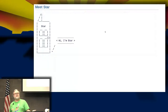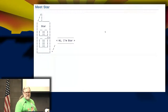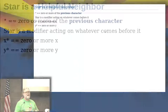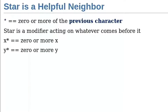Meet star. Star matches the previous character — whatever came before it — zero or more times. So it modifies whatever came before it; it's not itself matching anything. It's saying: this thing before me, can I find some of that? Or none of that. So `x*` says zero or more x; `y*` is zero or more y.